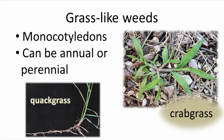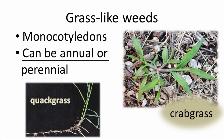As we just said, grass-like plants are monocots. One way to tell if a plant is a monocot is to look at how the veins or vascular bundles are arranged in the leaf. If somewhat parallel, it's likely a monocot. Grass-like weeds can be either annual, like the crabgrass shown here, or perennial, like quackgrass.